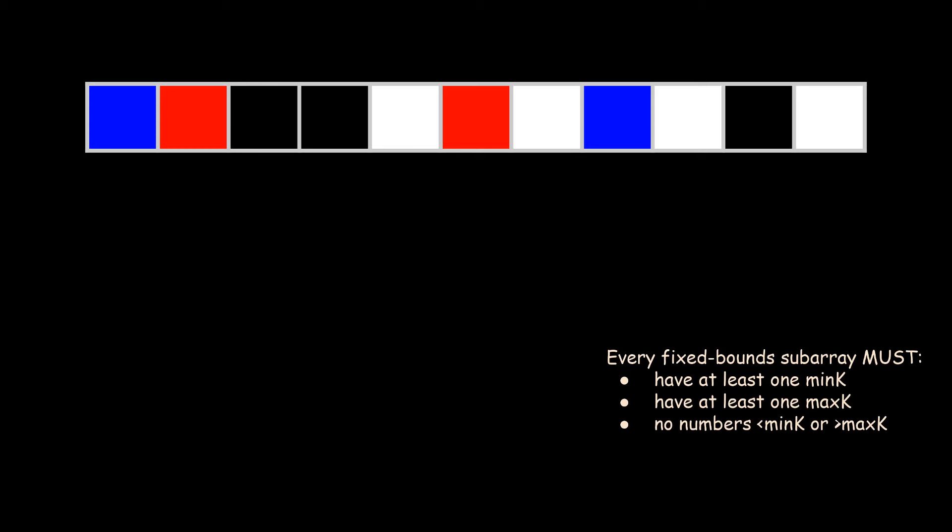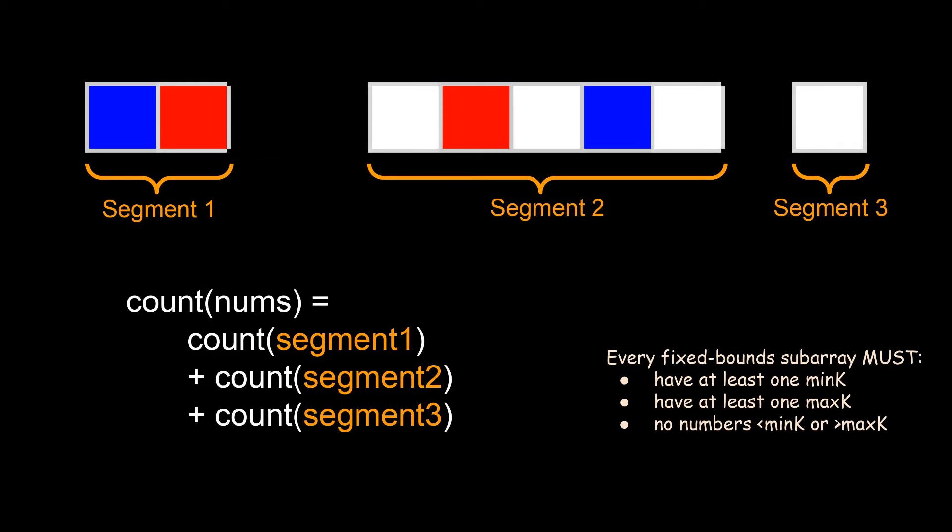Next, we use that information to reconceptualize our input, not as an array of numbers, but as essentially a sequence of colored blocks. A valid subarray must contain at least one red block, at least one blue block, and have to avoid all the black blocks in between. This allows us to then partition the input into segments, separated by gaps of black blocks. Since subarrays cannot cross black blocks, the number of subarrays for nums is equal to the sum of the number of subarrays for all of each individual segments.